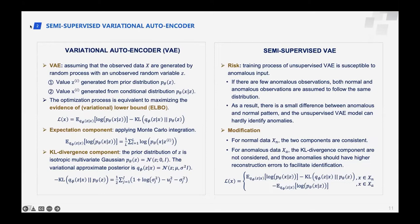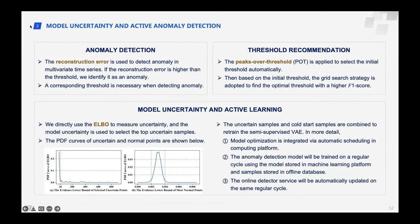For normal data, the KL divergence and expectation components are consistent with previous research. For anomalous data, we do not assume that the observed anomalies are generated by a random process; hence, we do not consider the KL divergence component. We require anomalies to have higher reconstruction errors for anomaly detection, and then adopt the reconstruction error to detect anomalies in multivariate time series.